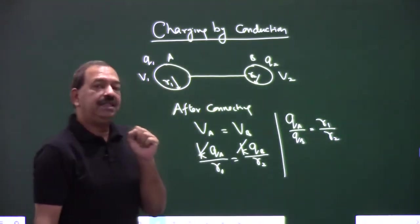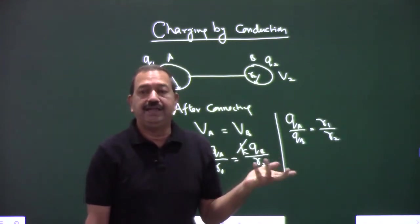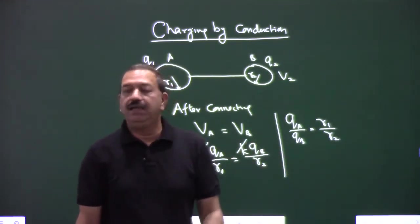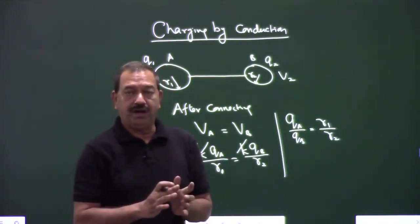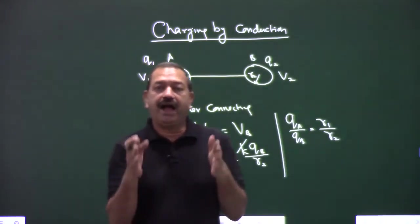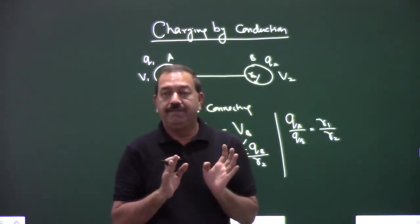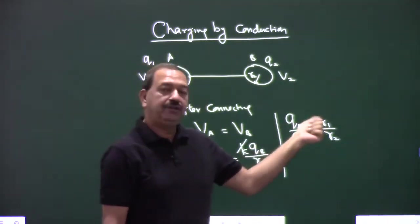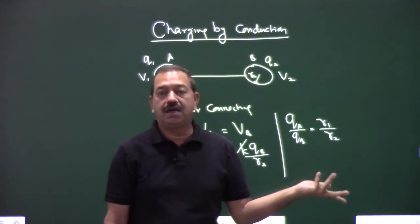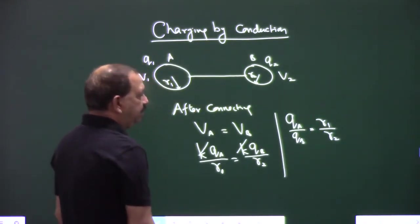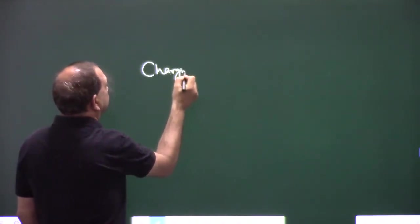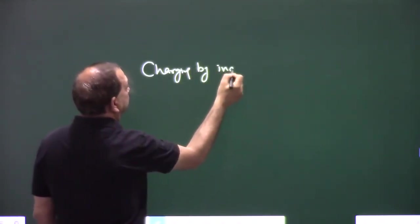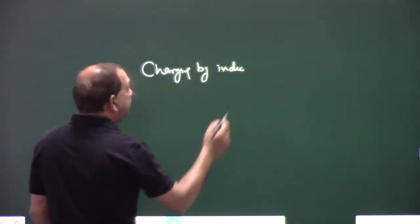The charge will be in ratio of their size — charge depends on size. Jiska size bada hoga uspe charge zyada hoga, aur jiska size chota hoga uspe charge kam hoga. Isliye agar identical bodies hain to charge equal hoga, but agar body badi hai to charge zyada hoga aur choti hai to charge kam hoga.